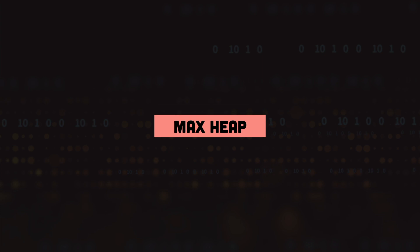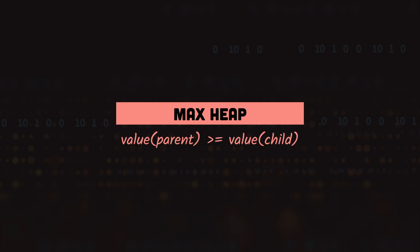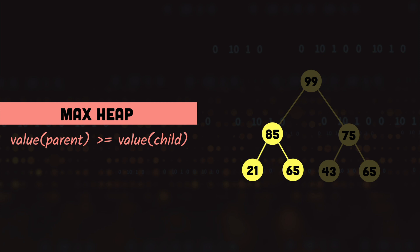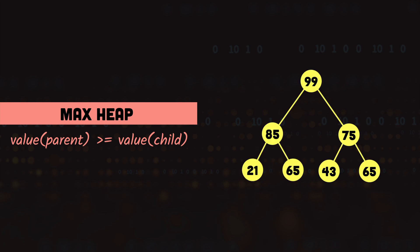Next we have the max heap, which is the opposite of the min heap — the value of each parent node is greater than or equal to its children. For example, in this binary tree: 99 is greater than 85 and 75, 85 is greater than 21 and 65, and 75 is greater than 43 and 65. Because all the properties of heap and max heap are fulfilled, we can say that this is a max heap. You can also see that the root node holds the largest value, and if we keep going down, the values keep getting smaller.